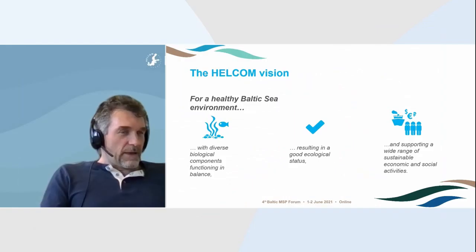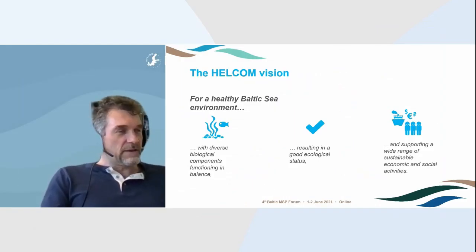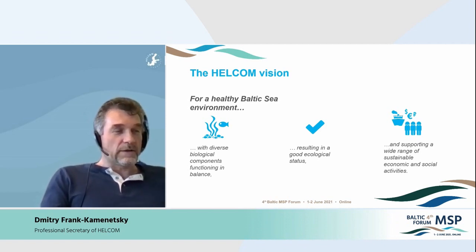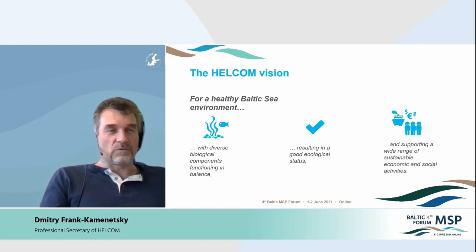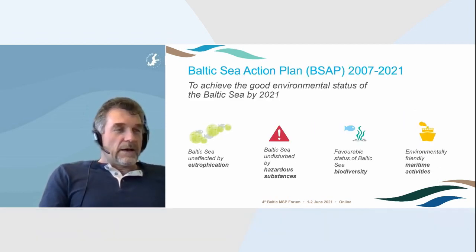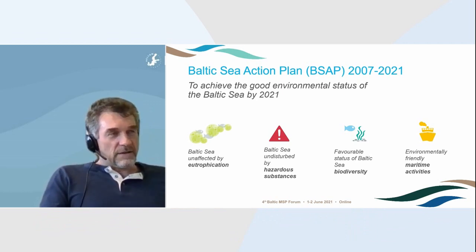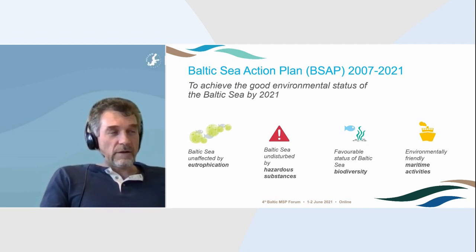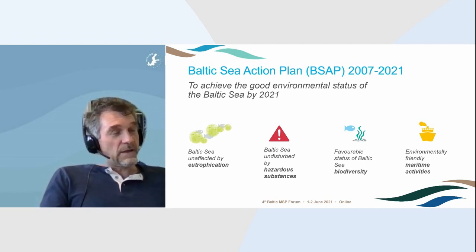The Baltic Sea Action Plan identifies the overarching goal as a healthy Baltic Sea environment with diverse biological components, resulting in good environmental status and supporting vibrant, sustainable economic and social activities. The current, still valid Baltic Sea Action Plan was adopted in 2007 and includes four components: eutrophication, hazardous substances, biodiversity, and maritime activities. But it says nothing about maritime spatial planning.